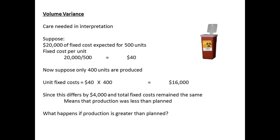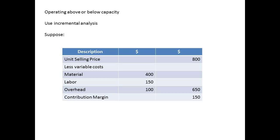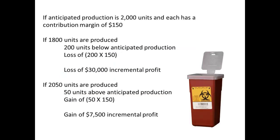Care is needed in the interpretation of variance. Let us suppose that the standard cost for overhead for 500 units was $20,000 of fixed costs based on a unit cost. If only 400 units are produced, then it might seem that fixed costs have been reduced. But all this really says is that production was less than planned, and this is the part that should be investigated. If the plant operates at above or below capacity, then we go back to the idea of incremental analysis. Let us assume that a good has a contribution margin of $150. If the anticipated production is 2,000 units and only 1,800 units are produced, then the loss in profit is the contribution margin multiplied by the number of units less than anticipated — in this case, a loss of $30,000 of incremental profit.